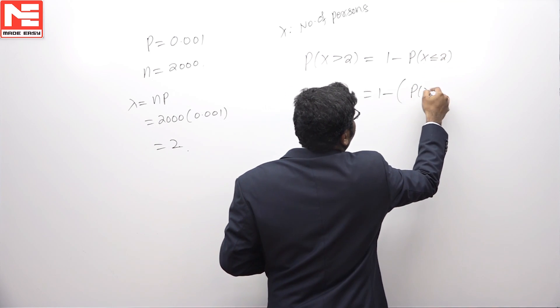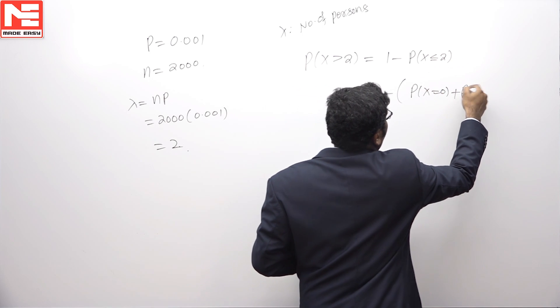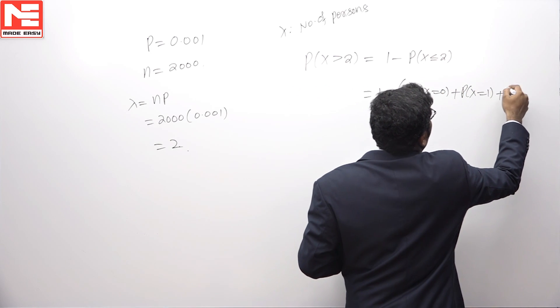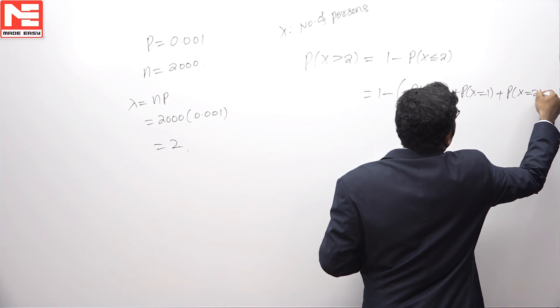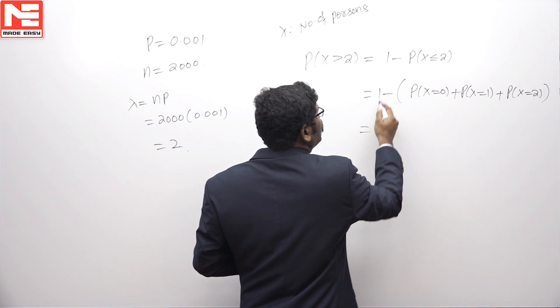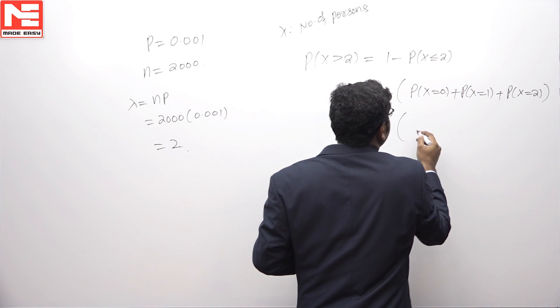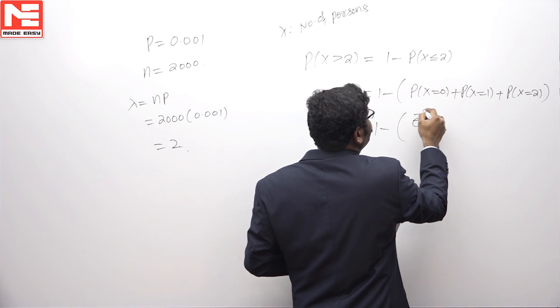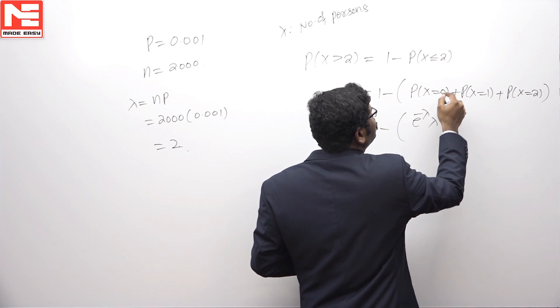So, 1 minus probability of X equals 0 plus probability of X equals 1 plus probability of X equals 2. In Poisson distribution, probability of X is given by e to the power minus lambda times lambda to the power X divided by X factorial.